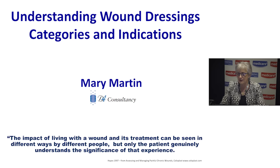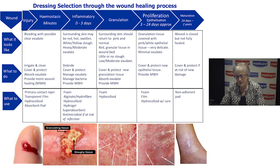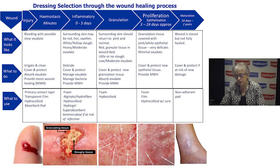Every wound is different, so we cannot make assumptions about one wound based on another wound. As we go through the presentation, we will go through each phase of the wound healing process and look at the dressing selection as we go through that process. We will look at what the wound should look like at that time, what we should be looking to do, and what we need the dressing to do.